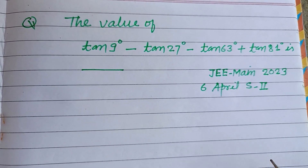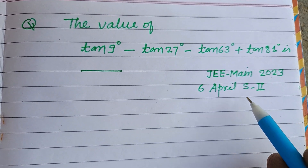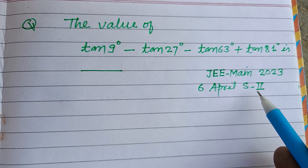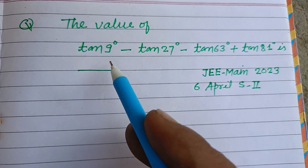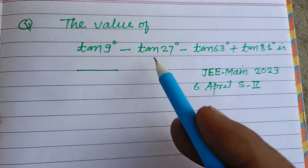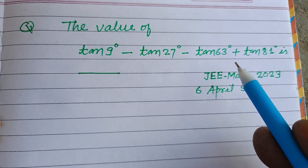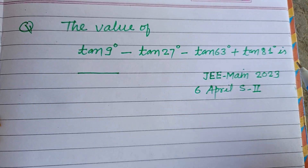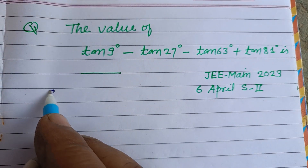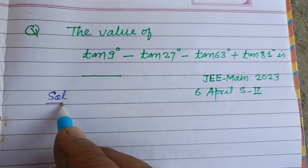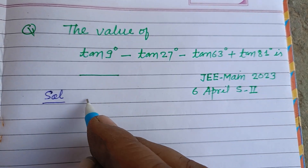Hello viewers, this is a question from JEE Main 2023, 6 April, Shift 2. The value of tan9° minus tan27° minus tan63° plus tan81° is — this question is mainly based on the complementary angle identity.